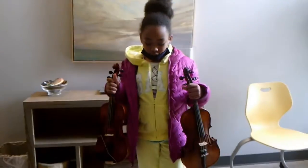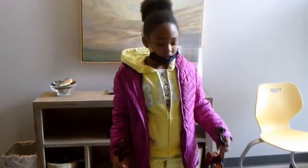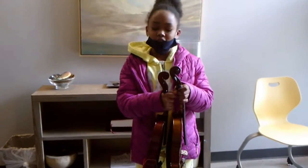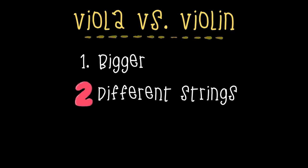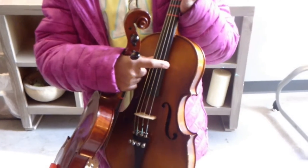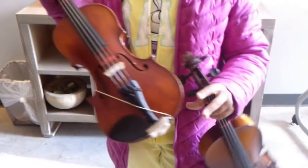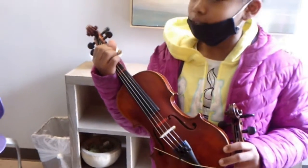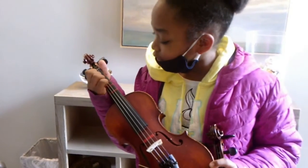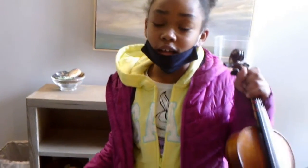Hello everyone, and today we're going to be explaining the differences between the violin and the viola. For one, the viola is slightly bigger and taller, and the strings are different. On the viola, the highest string is A and the deepest string is C. While on the violin, the highest string is E, which is a lot higher. And then our lowest string is D, which is higher than the viola's lowest.